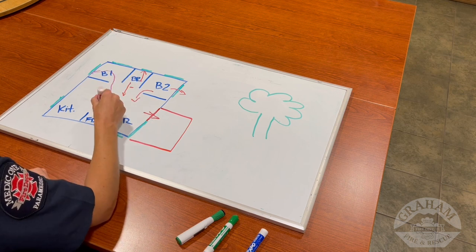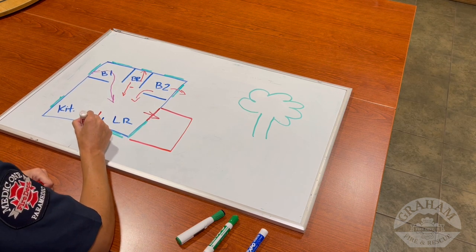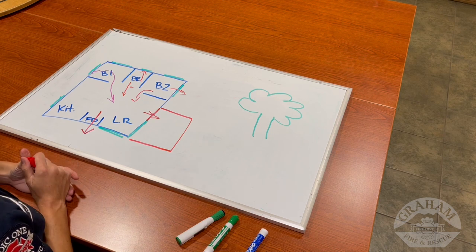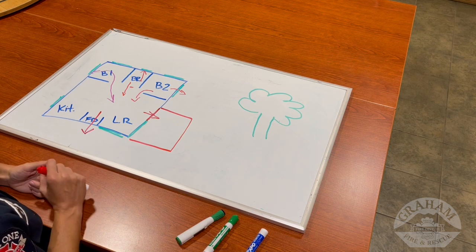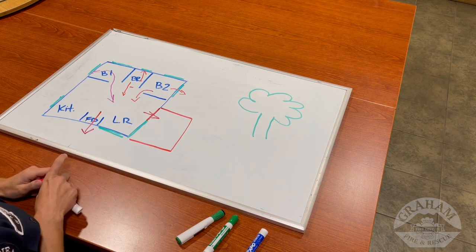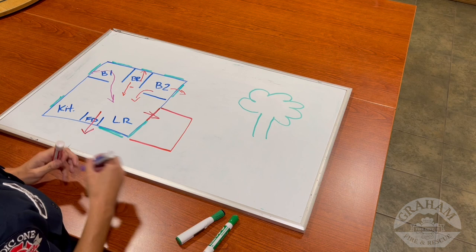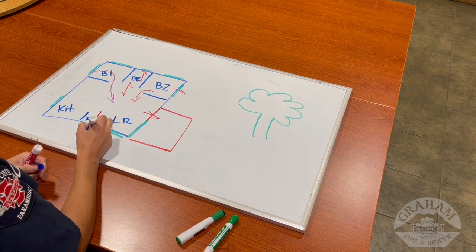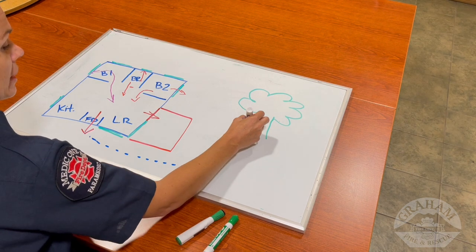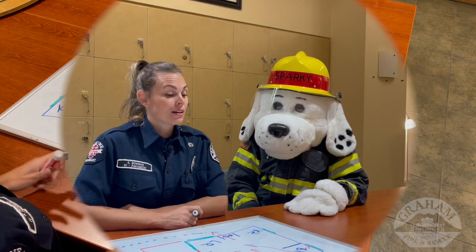And then any time you come out, you always want to head straight to the front door and get out because the goal, just like your home fire escape plan, you should always have a plan with your family if you're going to go to a tree or over to a neighbor's house. And in our case, we're actually going to go over to the tree. So you leave your room, over you go to my tree. Alright, Sparky,